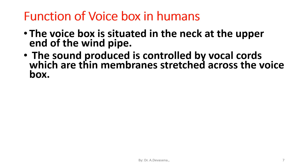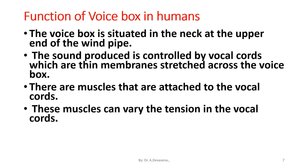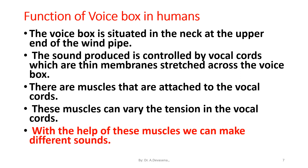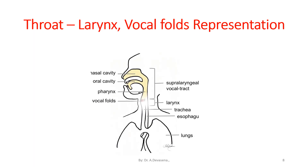The sound produced is controlled by vocal cords, which are thin membranes stretched across the voice box. There are muscles attached to the vocal cords, and these muscles can vary the tension in the vocal cords. With the help of these muscles, we can make different sounds. The throat comprises the nasal cavity, oral cavity, pharynx, vocal folds, larynx, and trachea. The vocal folds are responsible for the creation of sound in humans.